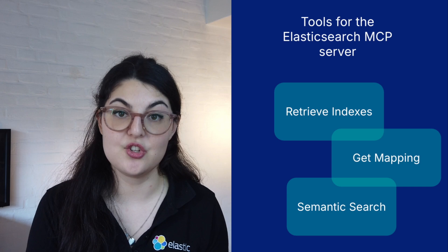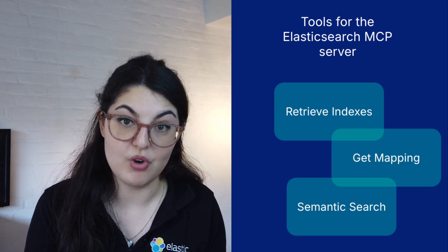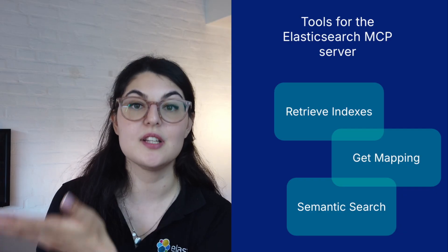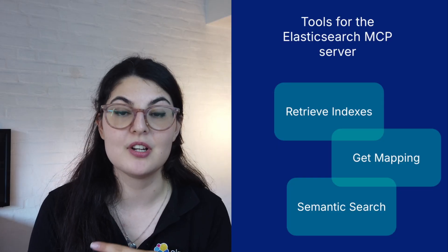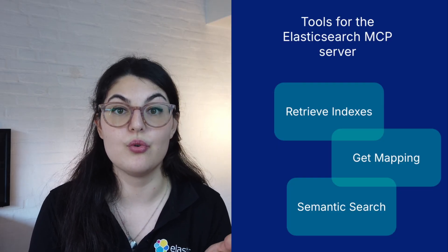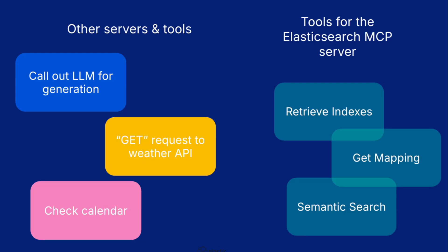We can still use semantic search as a function, but we can define the way an agent performs semantic search with the MCP standard, allowing any agent to perform this search or RAG — retrieving information and using it to generate an answer — using the same standard. So if another provider has a really good tool for checking flights, you can also pull that tool from the MCP marketplace into the same architecture. A lot of providers are now creating MCP servers, such as the Elastic server, with functions and tools defined using the same protocol so they work together easily.